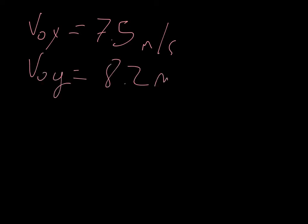But mine says a snowball is thrown with an initial x velocity, so v naught x, of 7.5 meters per second, and an initial y velocity of 8.2 meters per second, so v naught y is 8.2 meters per second.